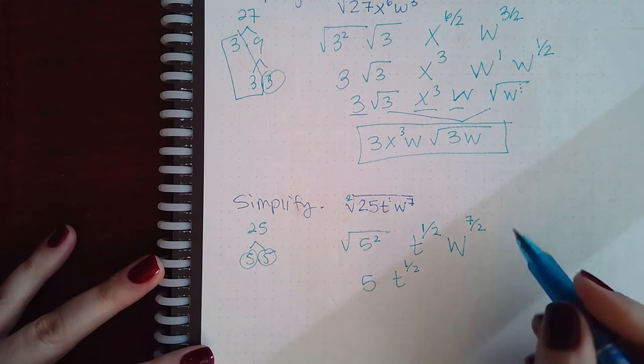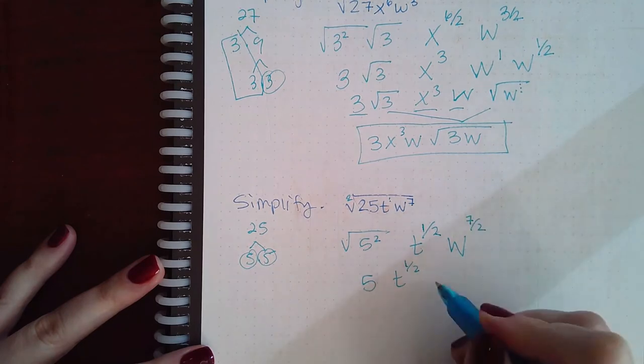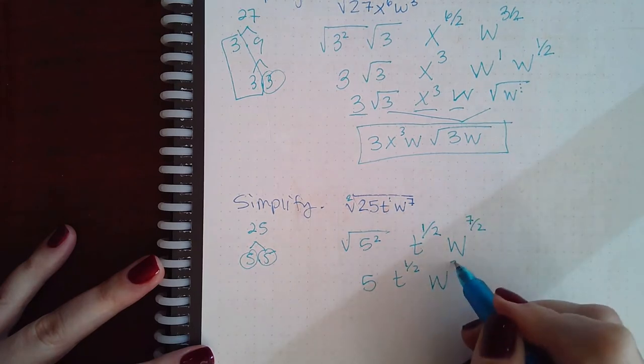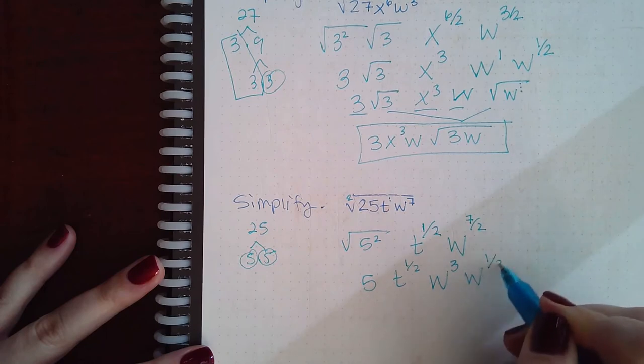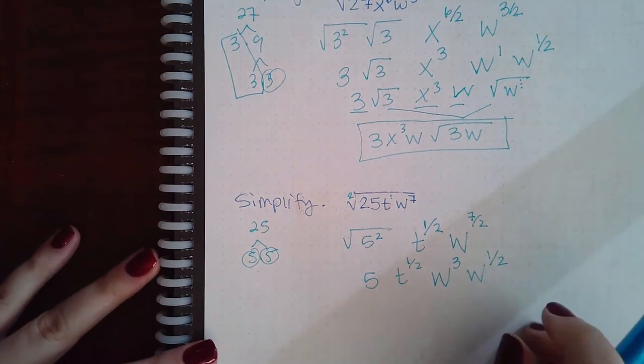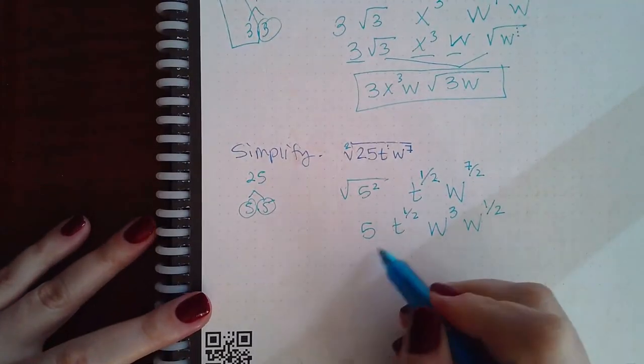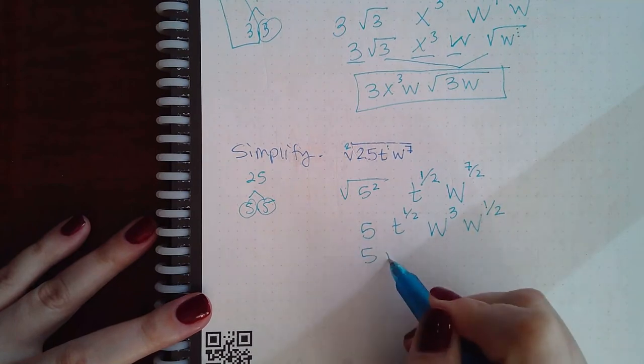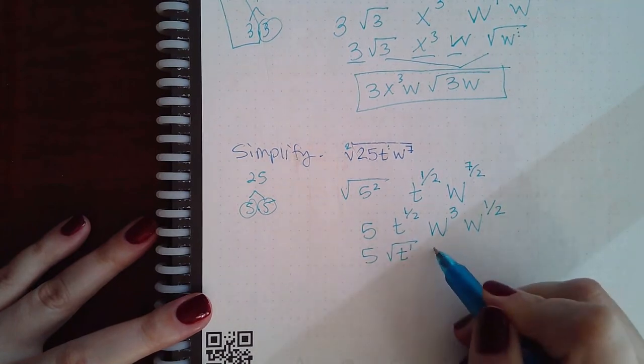Here, 2 goes into 7 three times, but you still have 1 left over. And then finally, you're going to rewrite those fraction exponents as square roots: t to the first power